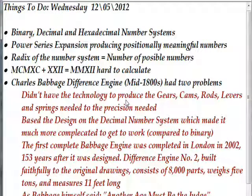The whole idea of these different number systems is that they're a power series expansion that produces positionally meaningful numbers. The radix of the number system in question is always the number of possible numbers in each of those positions. For instance, in the binary number system the two possible numbers you have are zero and one, so it has a radix of two. In the decimal number system the ten possible numbers you have are zero through nine.